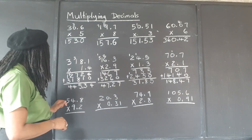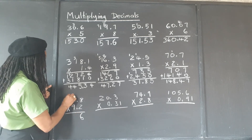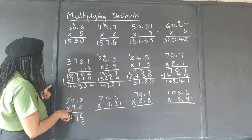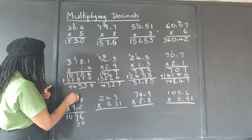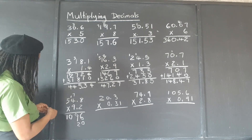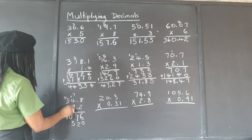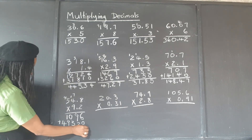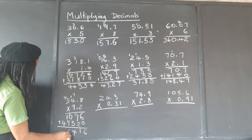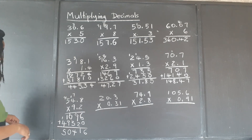We're multiplying 54.8 by 9.2. 2 times 8 is 16. 2 times 4 is 8, plus 1 is 9. 2 times 5 is 10. Put our placeholder in the second row. 9 times 8 is 72. 9 times 4 is 36, plus 7 is 43. 9 times 5 is 45, plus 4 is 49. Now we add: 6, then 9 and 2 is 11, carry. 3 and 1 is 4. 9 and 1 is 10, carry. 4 and 1 is 5. So in the final answer we're going to have 1, 2 decimal places — 1, 2.